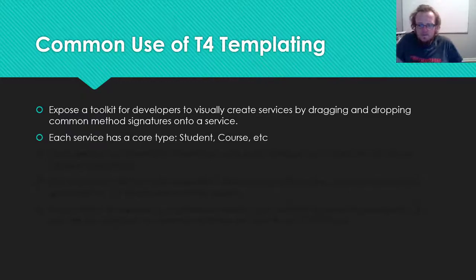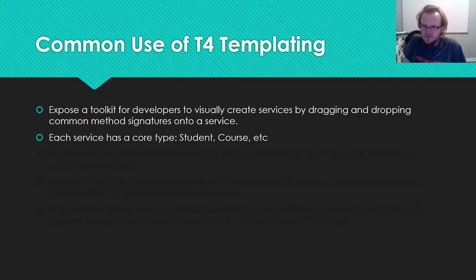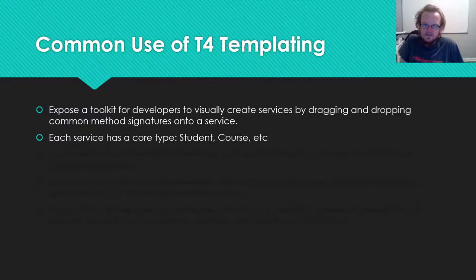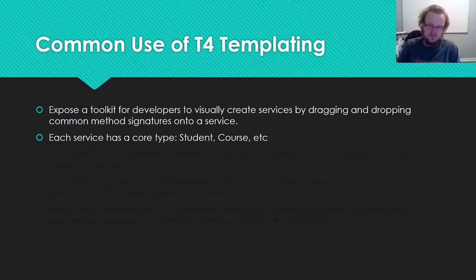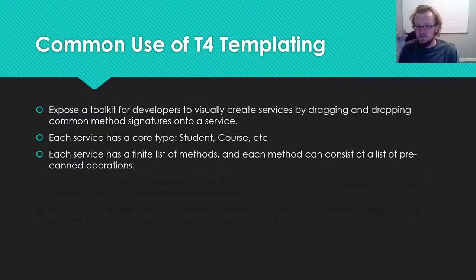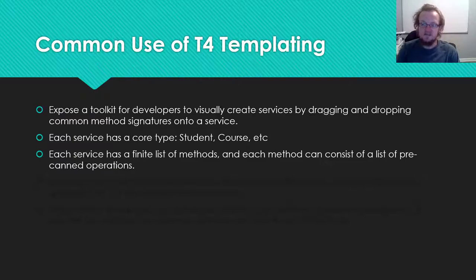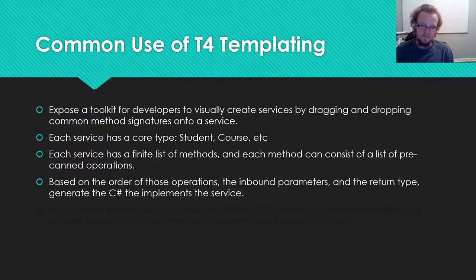If you think about your experience with assignment four or five, essentially every service, every EC, and every API controller has some sort of core type. Each service has a finite list of methods, and each of those methods typically exposes a pre-canned operation that works on one of those core types. You can look at the order of operations, the inbound parameters, and the return type, and actually generate the C# that implements both the API service controller and the EC.